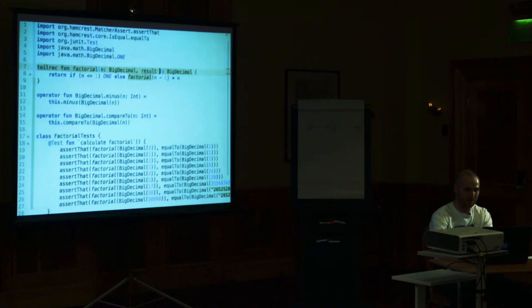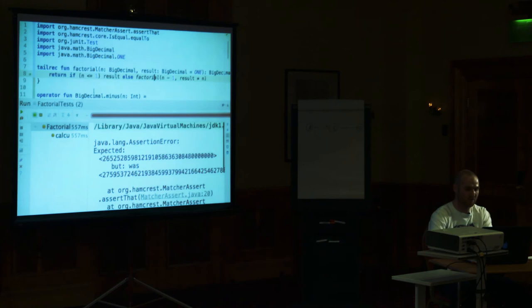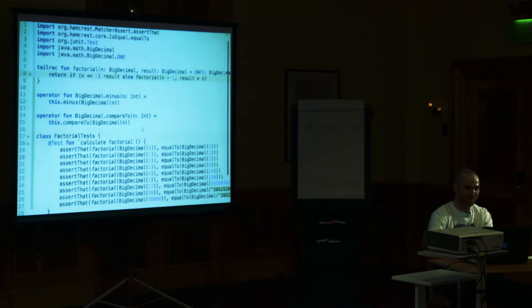I'll quickly rewrite it to a tail recursive version. The result is `BigDecimal` starting with one. If `n` is less than one, we return result; otherwise we do a tail recursive call with `result * n`. The `tailrec` keyword worked — we got some number back, a really long number, but it ran in half a second. So what happens is the last call in the function should be the function itself. Previously it was multiplication, but now there is tail call optimization.